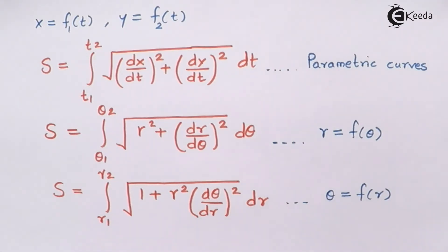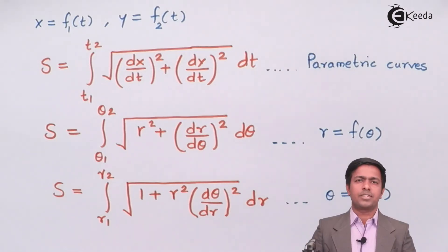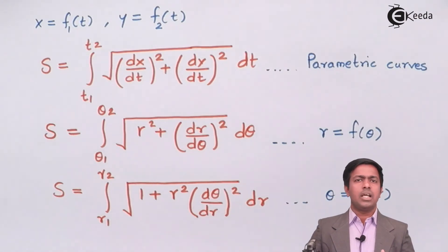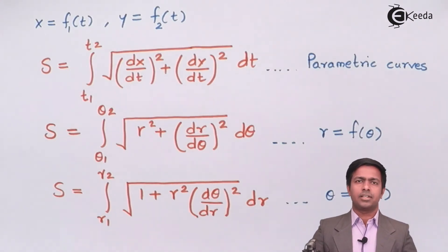So we have seen five formulas in total: two for Cartesian curves, one for parametric curves, and two for polar curves. We will use these five formulas to find the length of curves in rectification. In the next video, I'll start with problems based on rectification to find the length of different curves. Don't forget to share this video with your friends so they can also get good marks in the examination. Thank you very much!